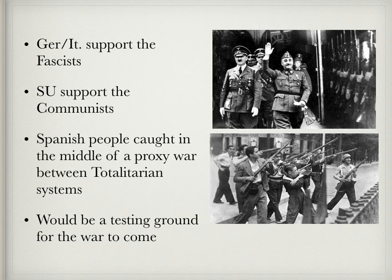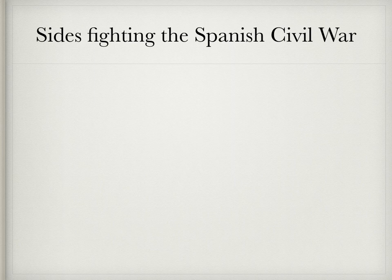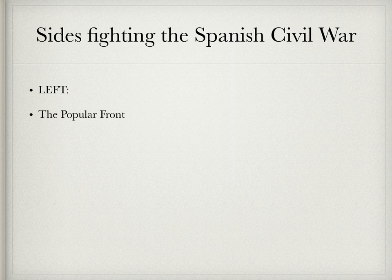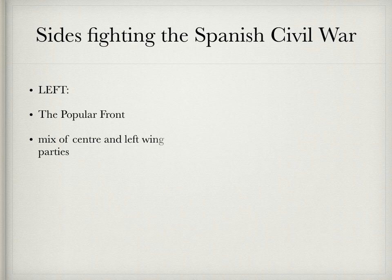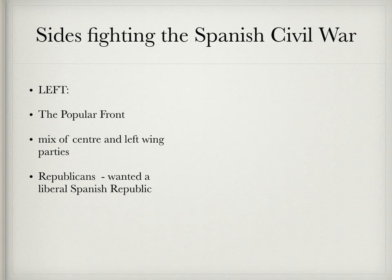Now we're going to discuss the sides fighting the Spanish Civil War — who found themselves on which side. On the left side we're going to have what's known as the Popular Front, which was the elected government of Spain. It was a pact of all the left-wing political parties — a mixture of center and left-wing parties. Republicans wanted a liberal Spanish government, so the Republicans were on the left side.